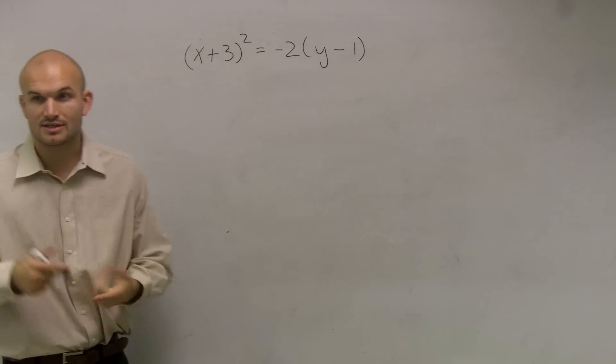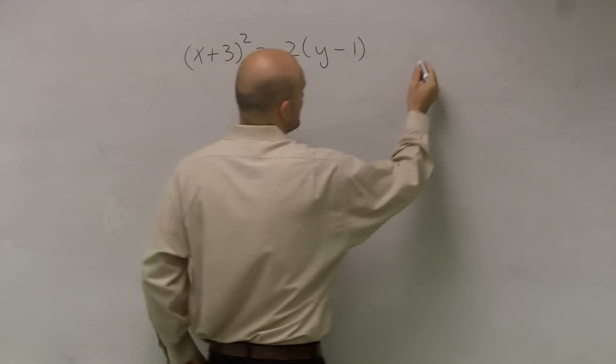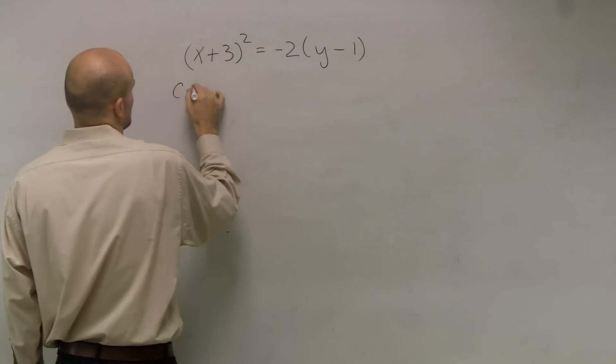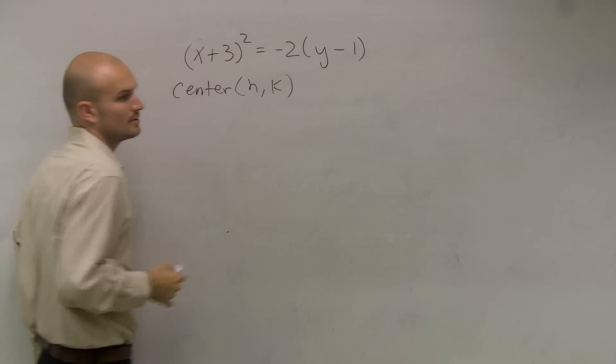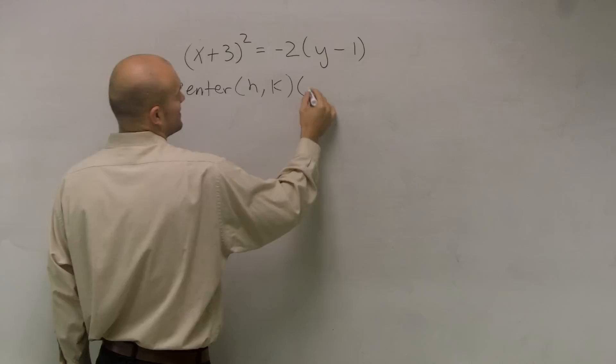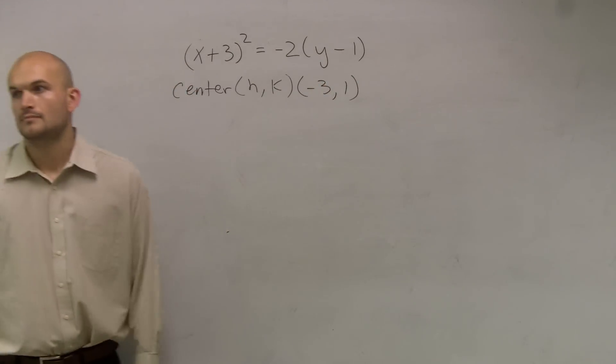So now the next thing we need to do is let's just go through the center. Remember the center, if you remember the formula, your center is h comma k. So for this problem, it's going to be negative 3 comma 1.